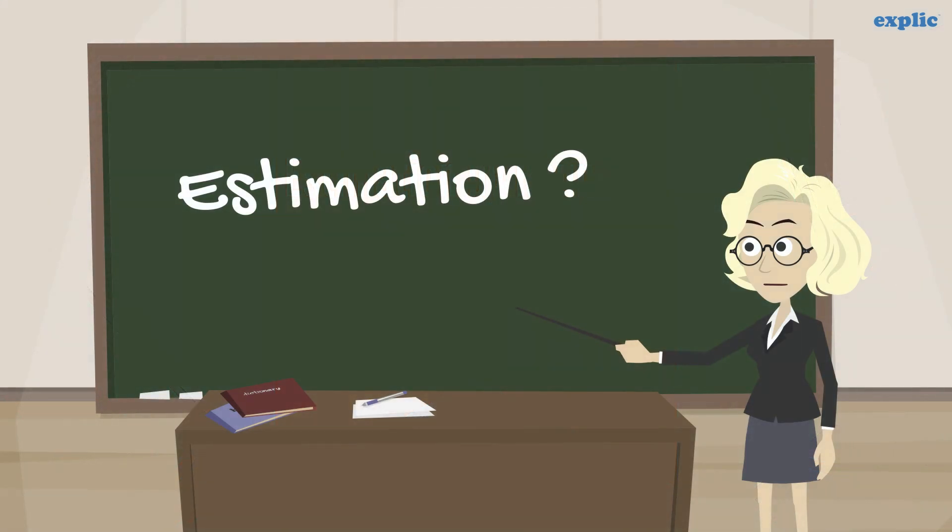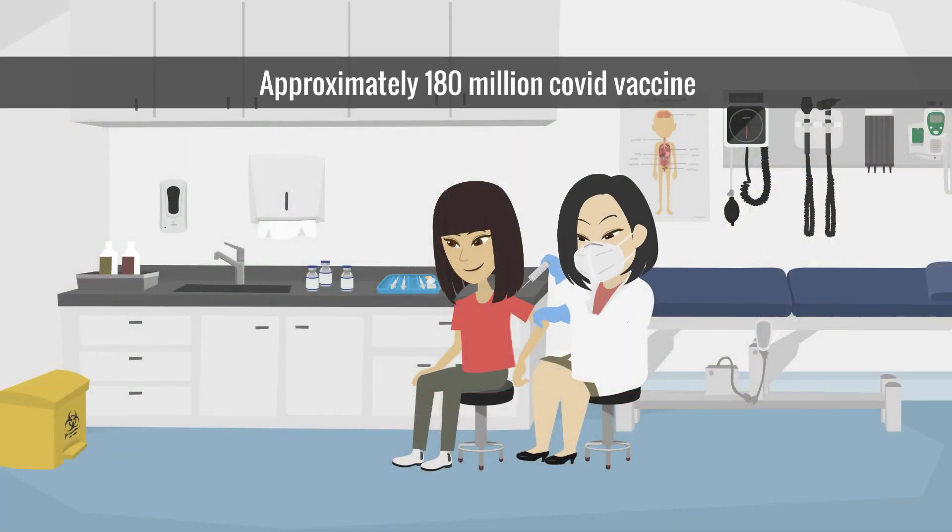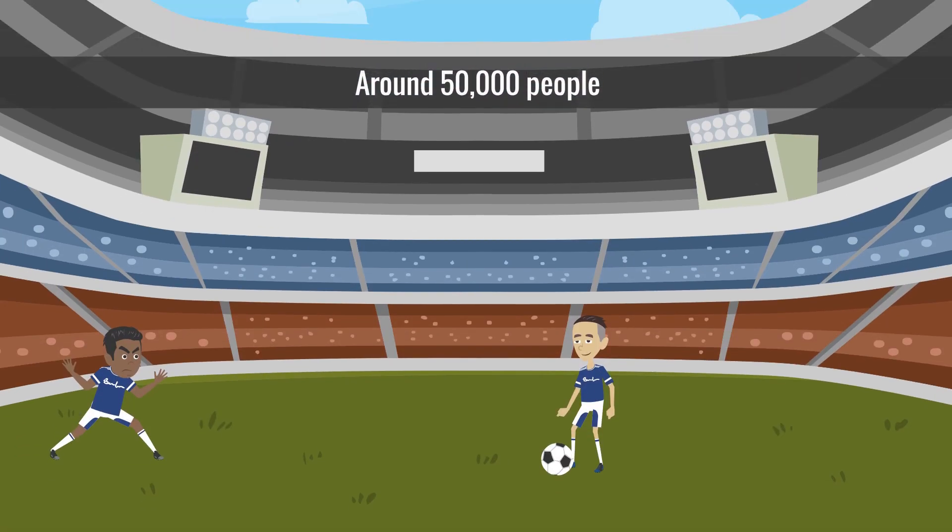Hello class, let's understand what is estimation. Approximately 180 million COVID vaccine doses were administered in India in August 2021. Around 50,000 people were watching a football match.